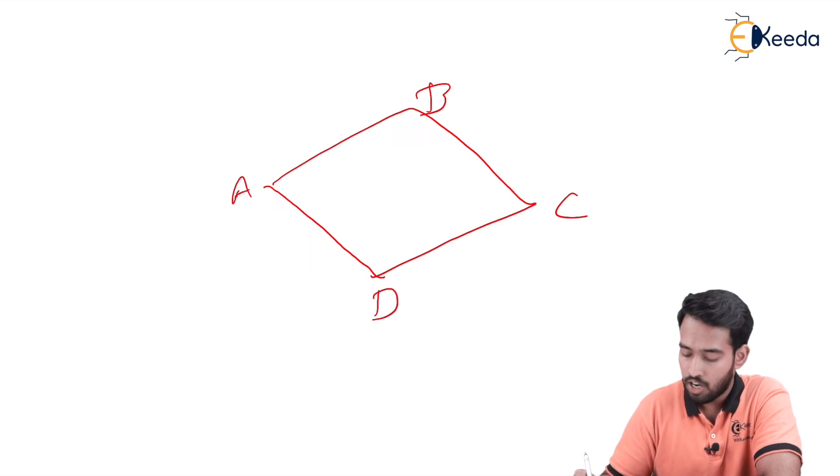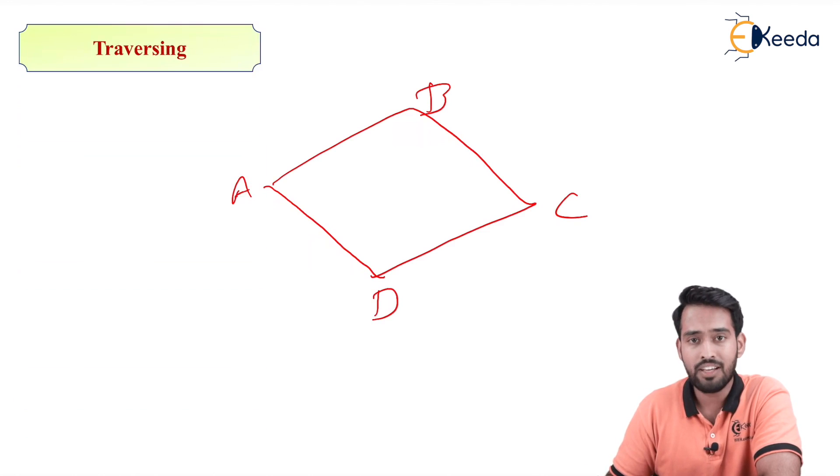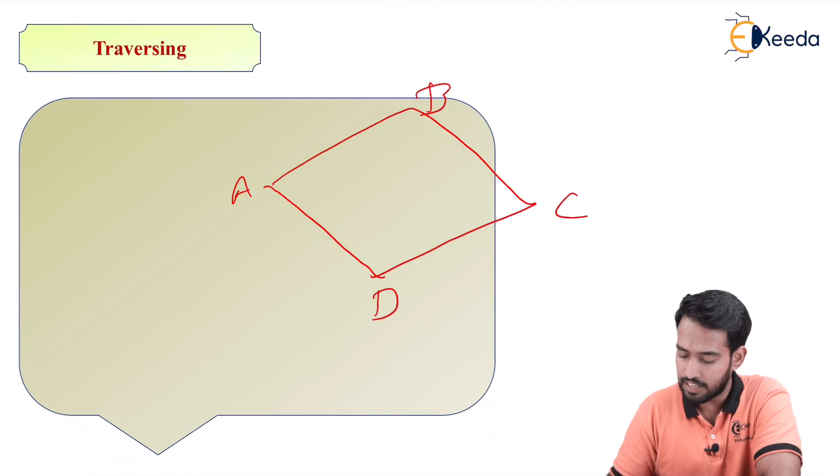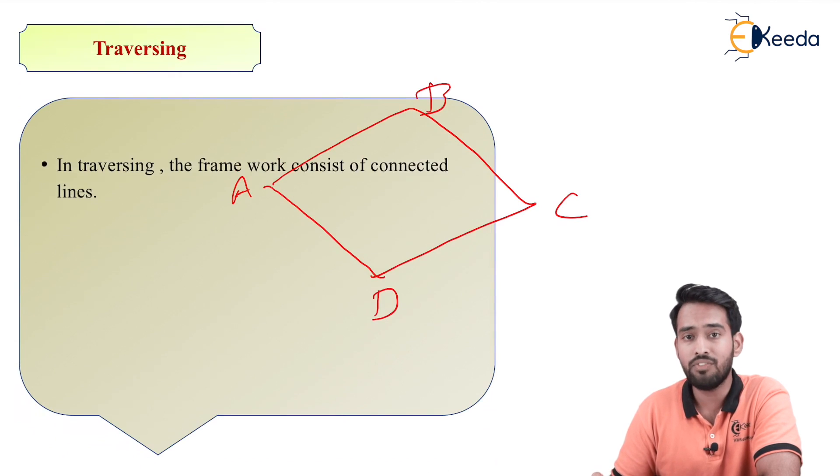So if you can see, in traversing there are two types: one is open traverse and the other is closed traverse.